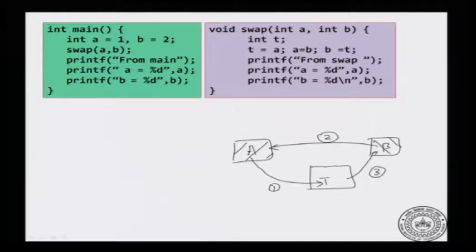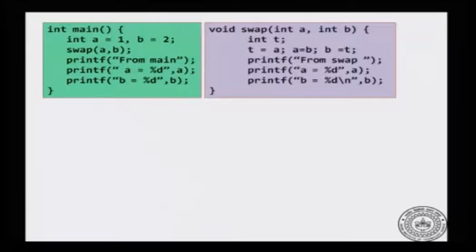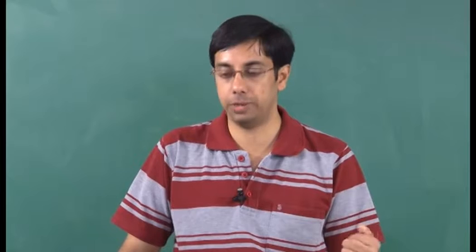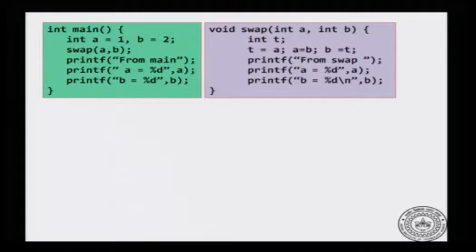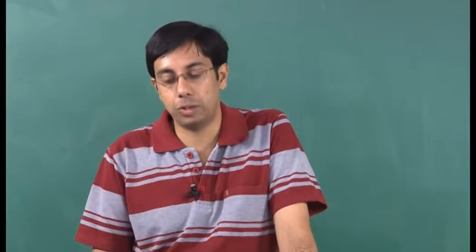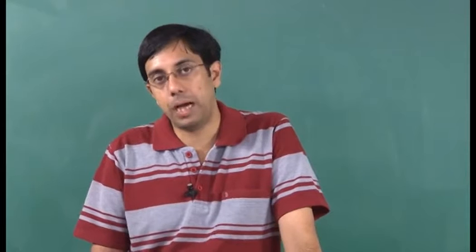The net effect is that B contains the old contents of A, A contains the old contents of B, and T is empty. This was the three-way exchange done within the main function. Now let us try to do that using a function. I have a swap routine which takes two integer arguments A and B and it is meant to exchange their values. Inside main I have A equal to 1, B equal to 2, and I call swap(A, B). Just to test, I have print statements showing the values of A and B after swap has executed, and when I come back to main I print A and B again.